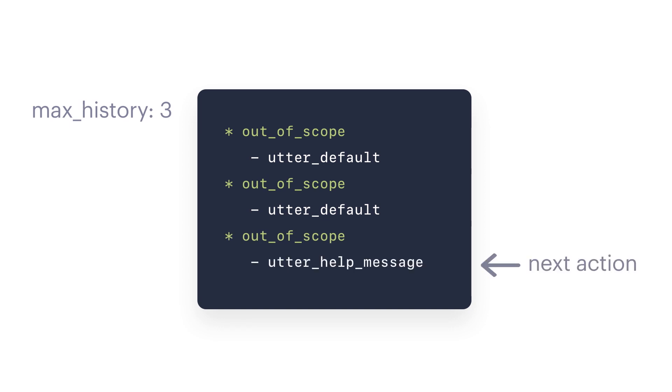The number you set for the max history parameter depends on the length of your training stories and the patterns you would like your assistant to remember. However, it's very important to keep in mind that setting the max history parameter to a higher number makes your models bigger, which increases training time. If you would like your assistant to take into account specific dialogue turns far back in the history, you should set those details as slots instead of setting max history to a higher number. This will likely improve model performance and reduce the risk of performance issues.